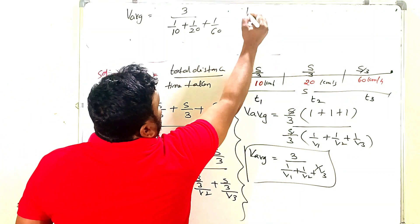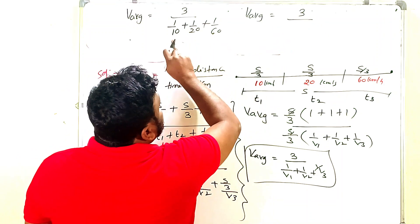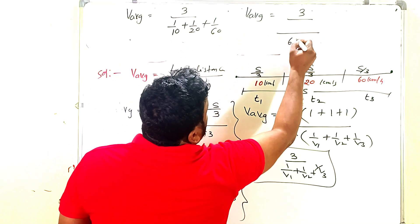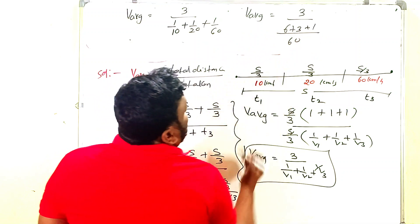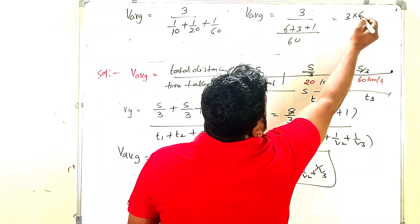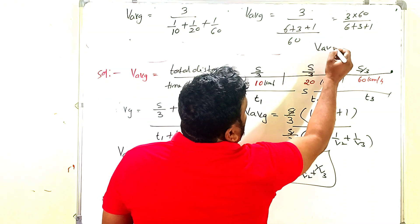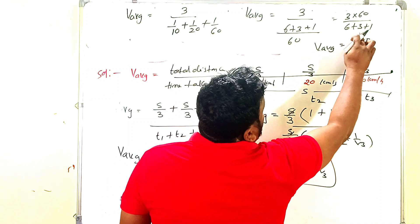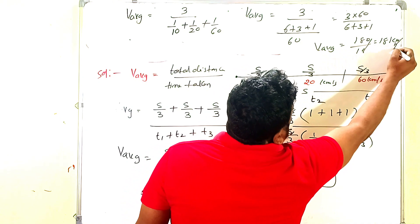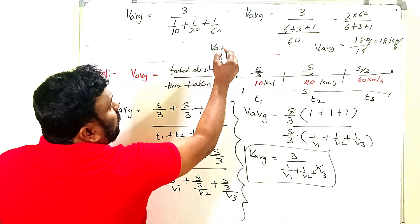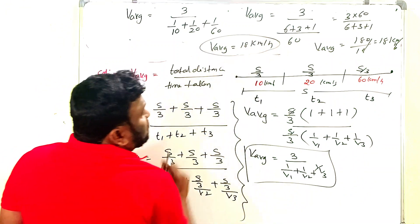So v_average = 3 divided by [(6 + 3 + 1)/60] = 3 × 60 / (6 + 3 + 1) = 180 / 10 = 18 kilometers per hour. Therefore, the average speed equals 18 kilometers per hour.